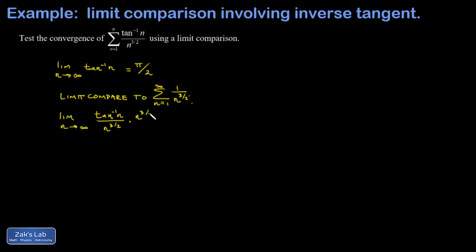Which is the same as multiplying by its reciprocal. The n to the three halves terms cancel out, and I'm left with the limit as n goes to infinity of inverse tangent of n.